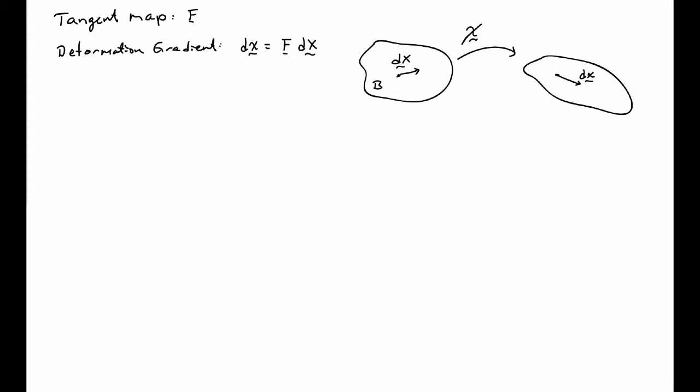Just to remind you what we had from before, when we have a deformation gradient F, we can consider it as a tensor that maps a small vector, d capital X, to a vector in the current configuration, d little x.